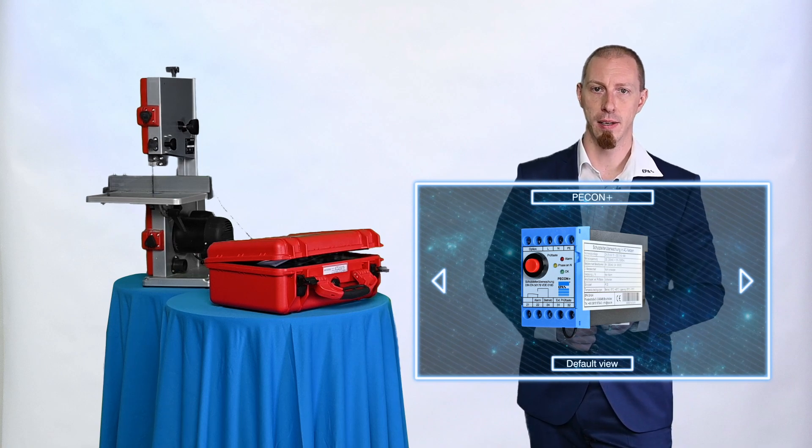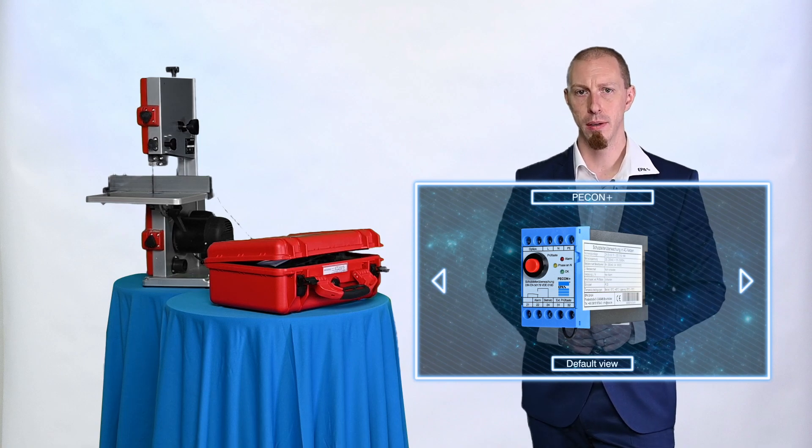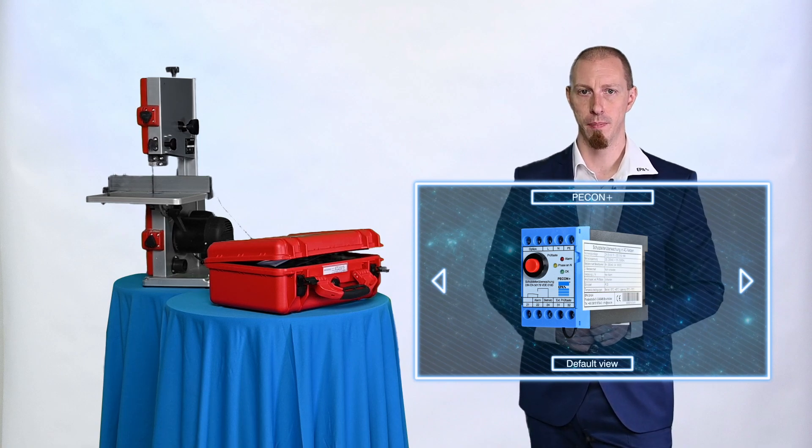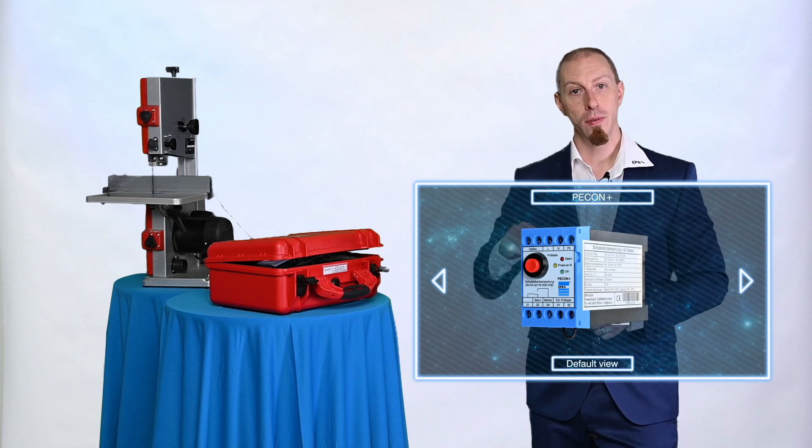The integrated phase monitoring can also, depending on the type of unit, either switch off the system if the polarity of phase and neutral conductor is reversed or only issue a warning message. Optical signaling directly on the unit is also available.